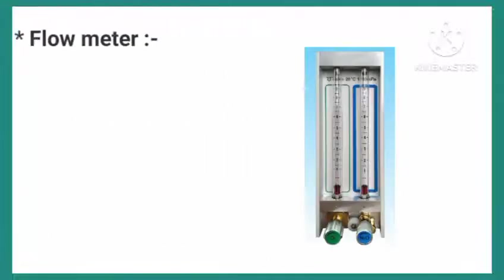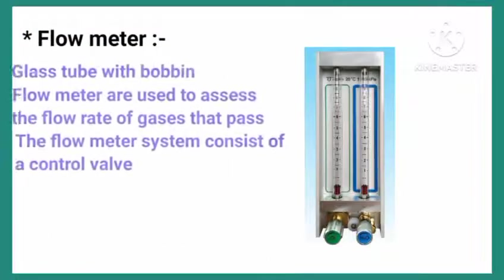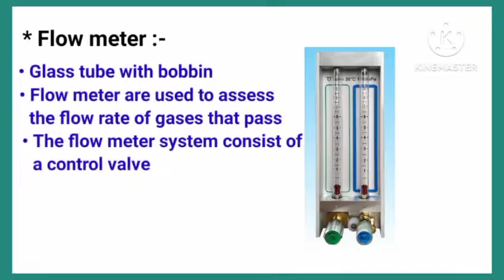Flow meter. The flow meter consists of a glass tube with a bobbin. Flow meters are used to assess the flow rate of gases that pass. The flow meter system consists of a control valve.